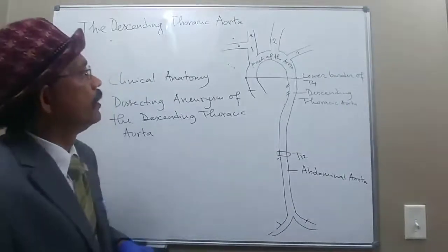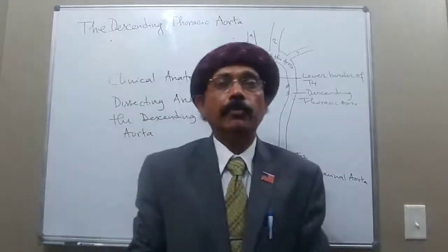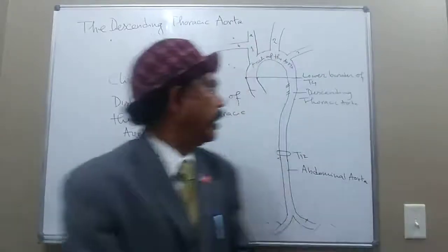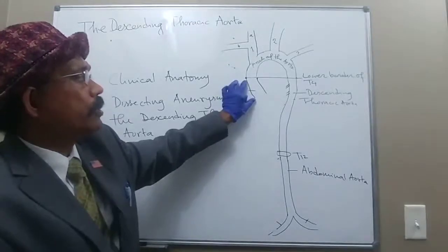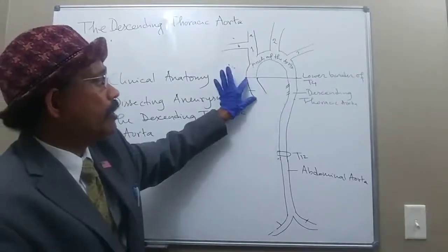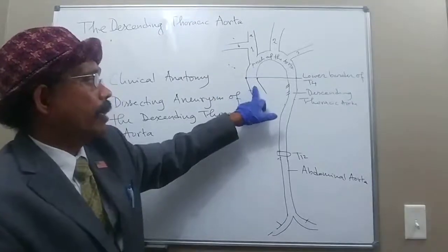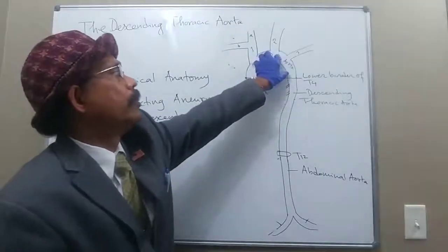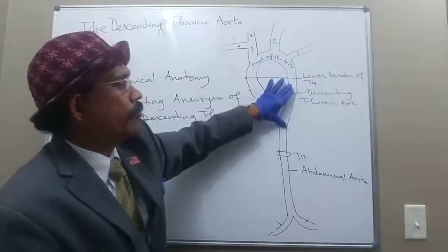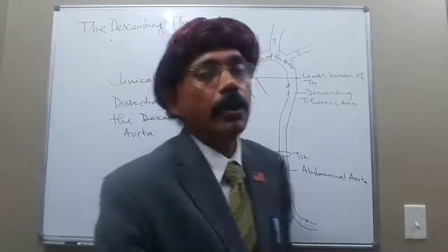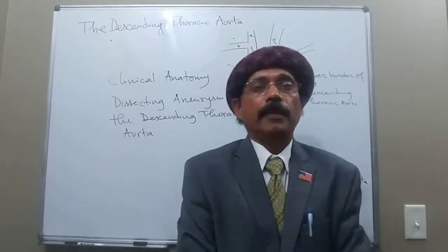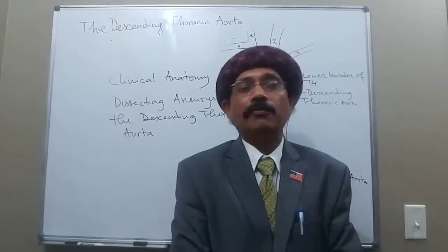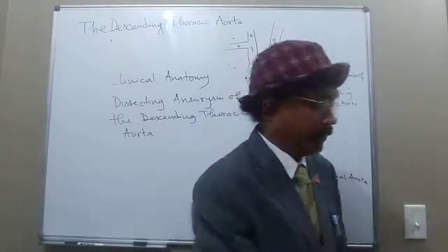So we have covered the branches of the descending thoracic aorta and its location as a content of the posterior mediastinum. The ascending aorta is a content of the middle mediastinum with its two branches — the left and right coronary arteries supplying the heart. The arch is superior mediastinum, and the descending thoracic aorta is posterior mediastinum. That's all about the anatomy of the descending thoracic aorta. If you have any questions, please feel free to ask. Have a nice day, bye.